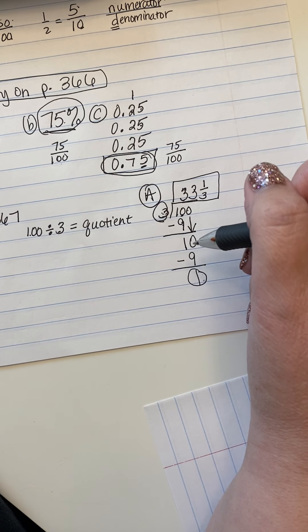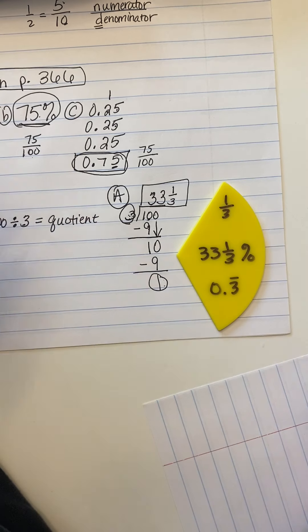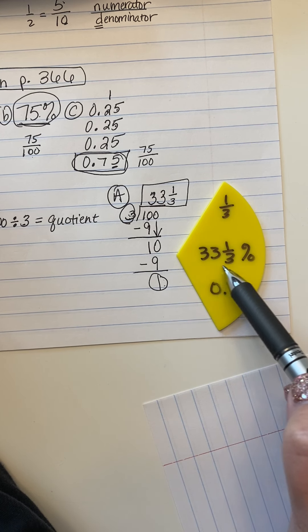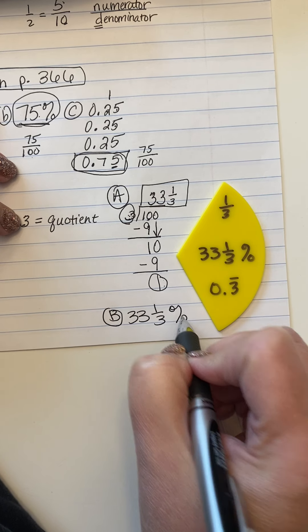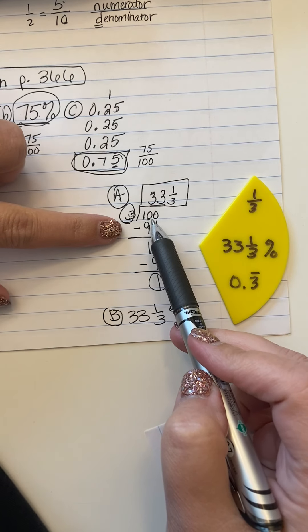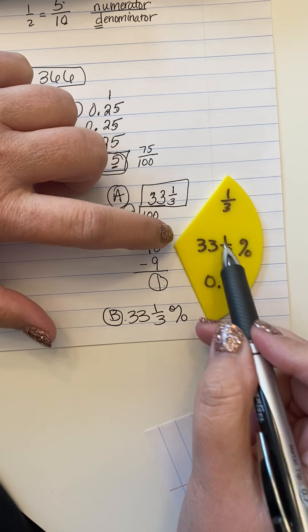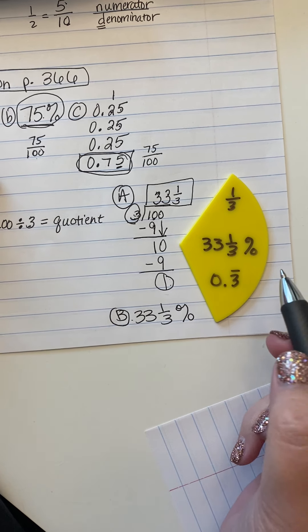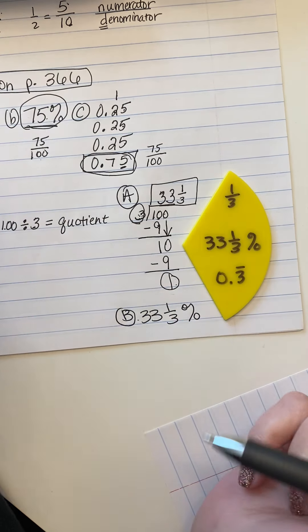Now pull out your one-third fraction manipulative. Question 3b asks: what percent is printed on the one-third fraction manipulative? The percent on there is 33 and one-third percent. When we divided 100 by 3, we got 33 and a third — and the percent for the one-third piece is 33 and one-third. That is how they determined that number. That's why your fraction pieces will come in handy.